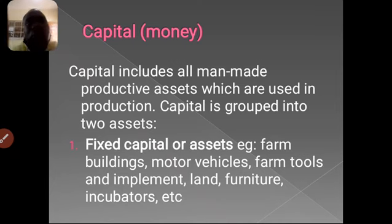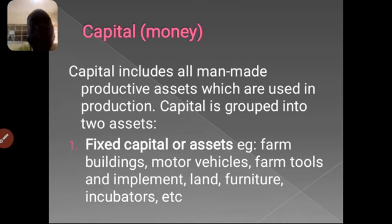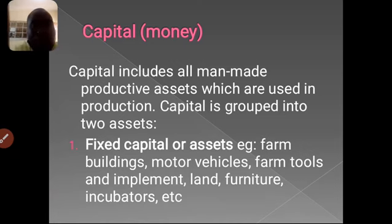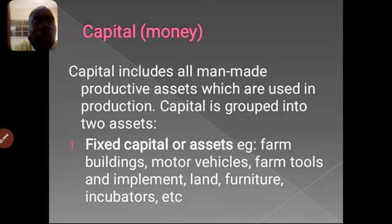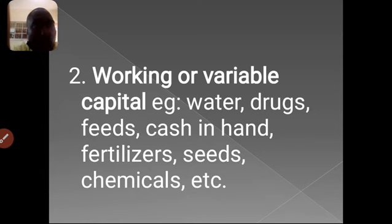Another factor we are looking into is capital, which is money. Capital is all man-made productive assets which are used in production — that is, all what you have and bring into your production at the beginning in the form of money, in the form of material, in the form of building, in the form of seed. All these things that you bring into production at the beginning of your enterprise is what you refer to as capital. It can be either fixed capital, which is also referred to as asset capital, or variable capital, also called working capital.